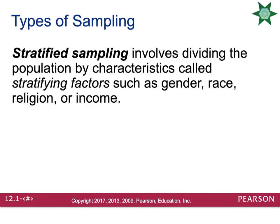Another type of sampling is stratified sampling, and this involves dividing the population by characteristics called stratifying factors. These can be gender, race, religion, income, sexual orientation, etc.